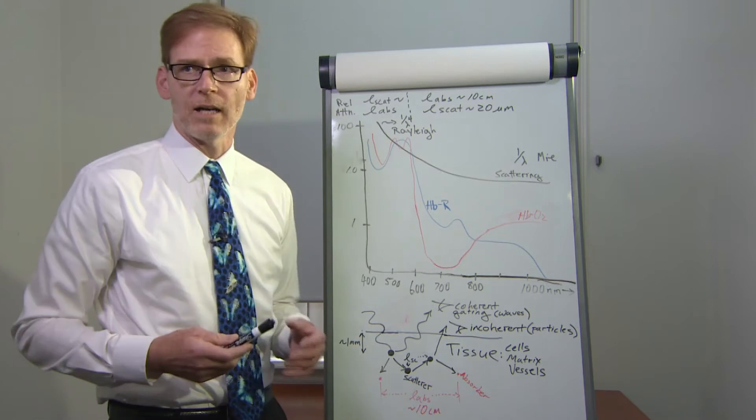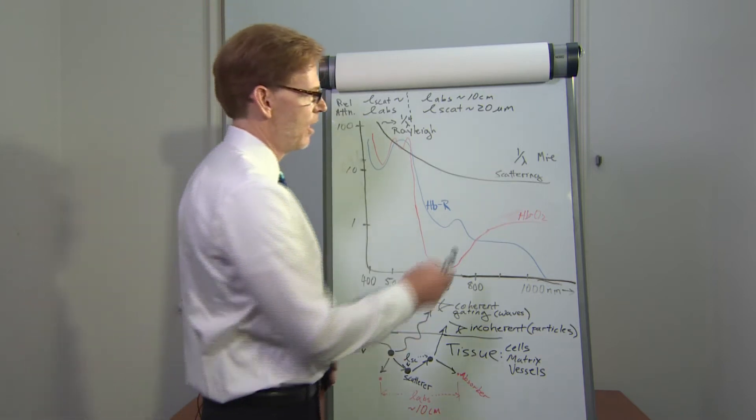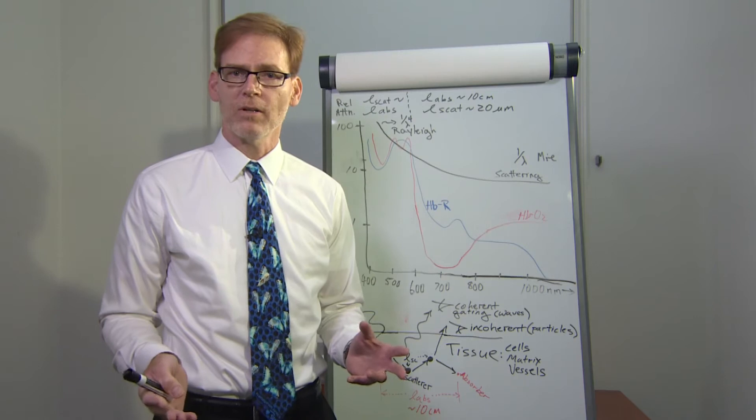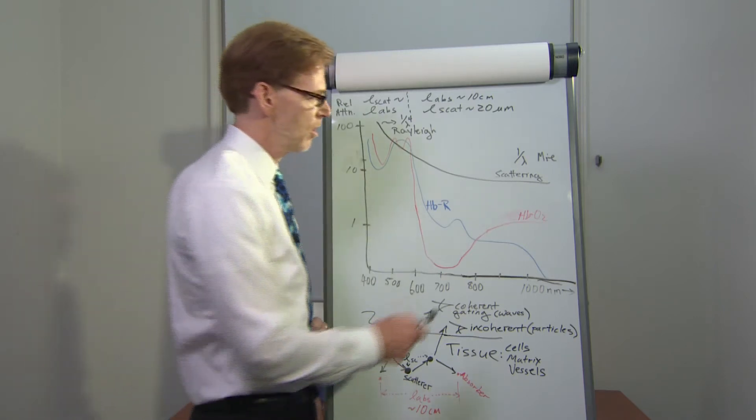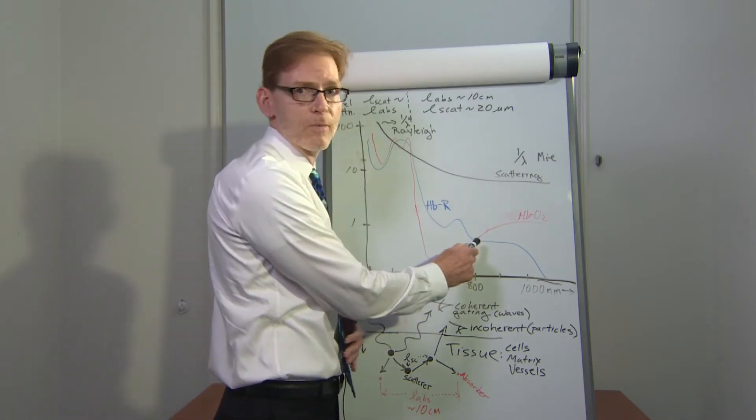In this regime, multiple light scattering dominates light propagation, and scattering lengths are on the order of about 20 microns, whereas absorption lengths are much longer, on the order of about 10 centimeters.